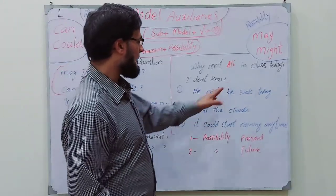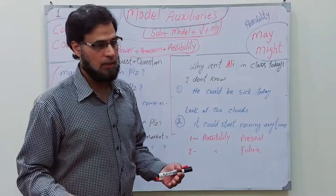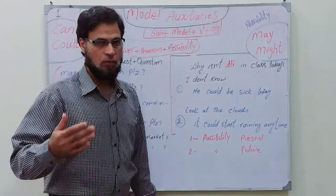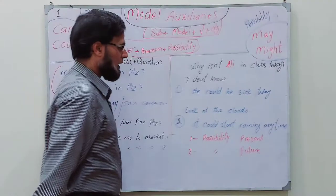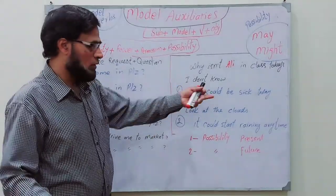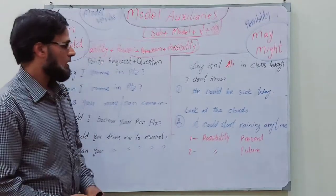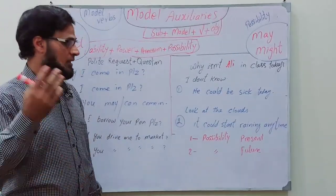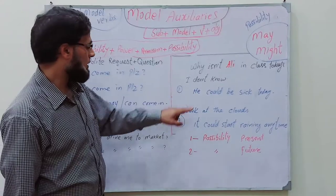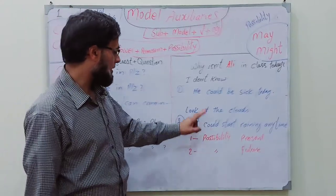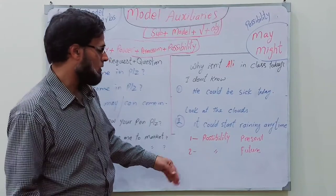Can and could can also be used for possibility. For example: 'Why is Ali not in class today? I don't know — he could be sick today.' Also: 'Look at the dark clouds in the sky — it could start raining anytime.' The first sentence is present possibility and the second is future possibility — so 'could' can express possibility in both present and future.